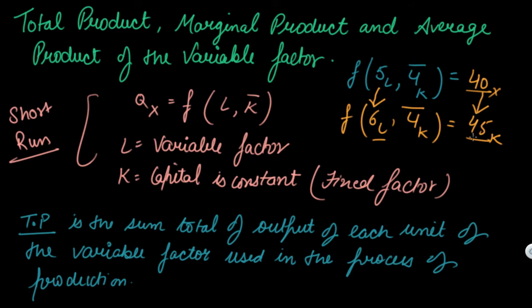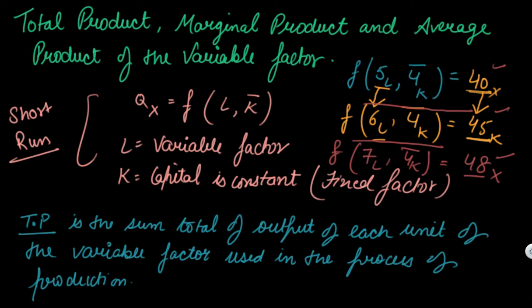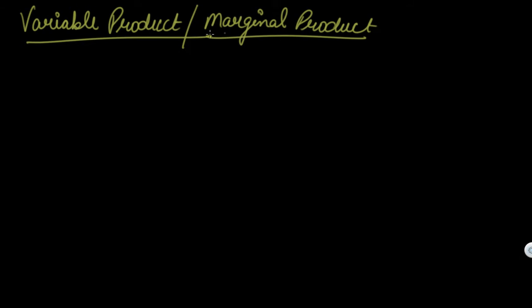So if you are using six units of labor you have 45 as your total output; if you are using five labor units you have 40 units of total output. The sum total of the output you get by increasing each unit of the variable factor is your total product. If you use seven labor units with capital constant, you get — let's say — 48 as total output. As you keep increasing units, your total product increases.